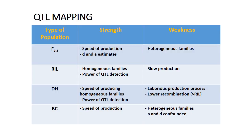Coming to QTL mapping. This is a table differentiating between different populations used in mapping. Double haploid, F2-derived F3, RIL populations and backcross populations are used in linkage mapping, QTL mapping and other studies. Among these four, RIL and double haploid populations are more efficient. RIL and NIL populations are used in high-resolution mapping whereas F2-derived F3 and backcrosses are only used in preliminary studies.